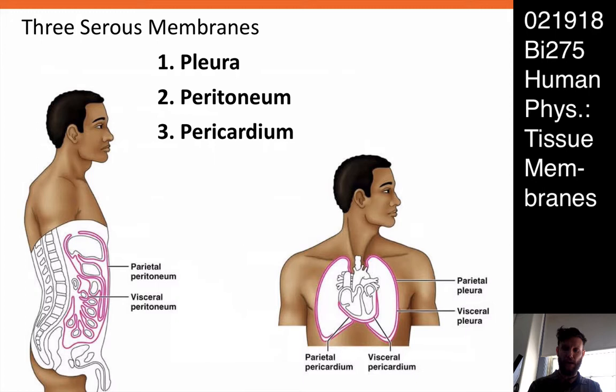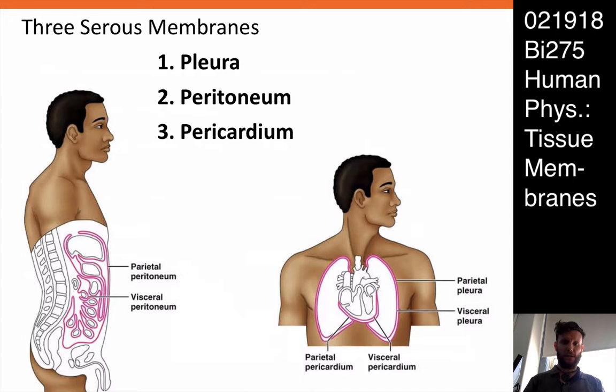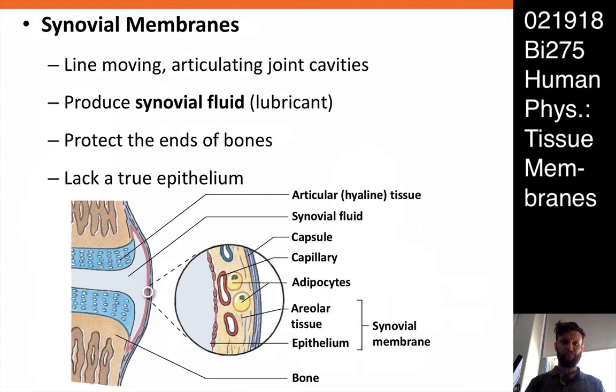We also talked about the pericardium, which has a visceral and parietal layer as well. The one thing about the kidneys — kidneys are actually not covered in visceral peritoneum. They're tacked to the back wall of the abdomen by a thin layer of parietal peritoneum; just a little bit of the kidney is covered by some parietal peritoneum that pins it to the back wall. So the kidney is what's called a retroperitoneal organ.